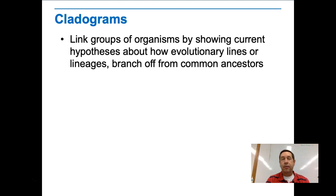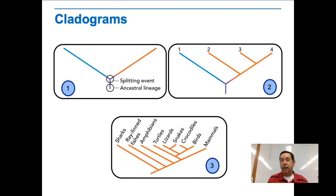In making these groups, we use diagrams called cladograms, which are branch diagrams. They show the link of groups of organisms by showing the current hypothesis about how the evolutionary process worked in a particular group, with different species branching off from a common ancestor.